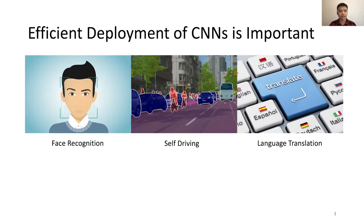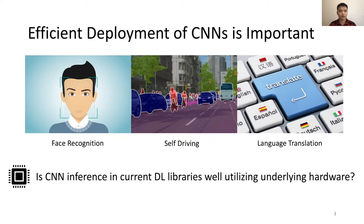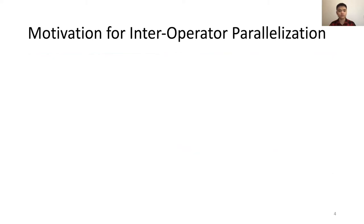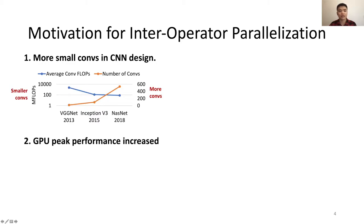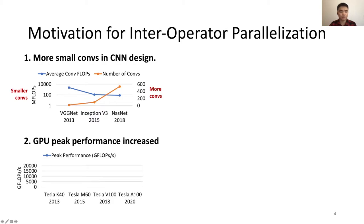CNN models are widely used in our daily life, and it is important to efficiently deploy these models. However, is CNN inference in current deep learning libraries well-utilizing the underlying hardware? The answer is no. Looking at the trend in CNN design, using VGNet, Inception V3, and NASNet as examples, people tend to use more convolutions in their network, but the average size of convolution decreased. On the other hand, GPU peak performance increased a lot — taking NVIDIA and Tesla GPUs as examples, peak performance increases almost linearly with time.